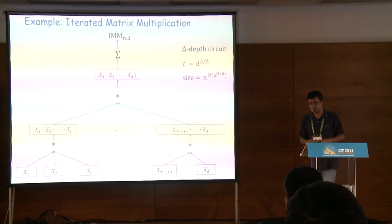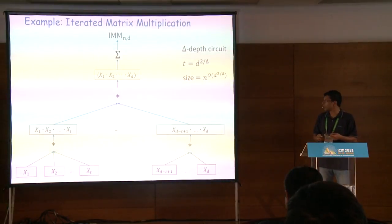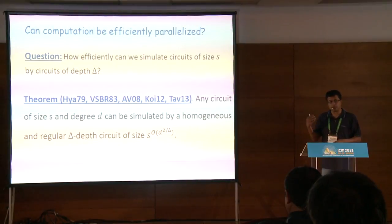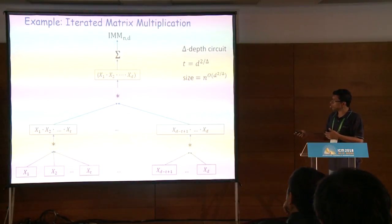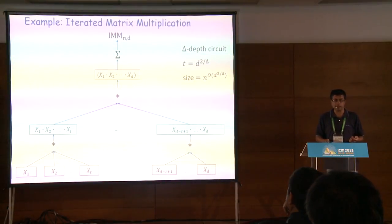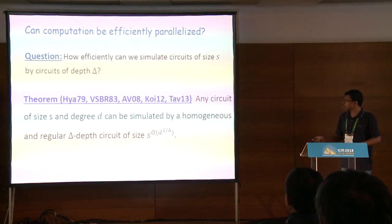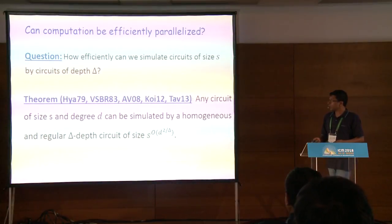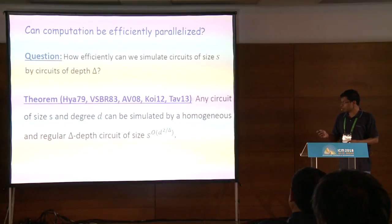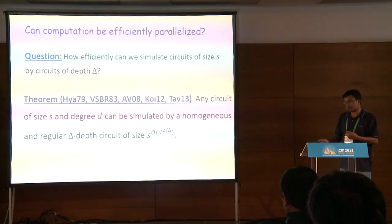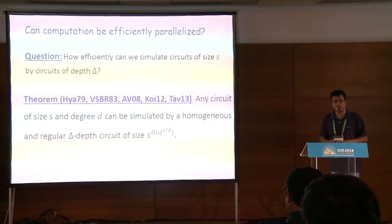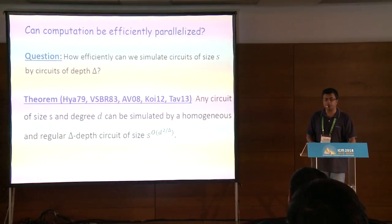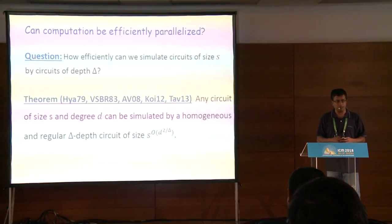The remarkable result, starting from the work of Hyafil, then Valiant, Skyum-Berkowitz, and a series of works after that, is that any arithmetic computation can be parallelized similarly. If you have a circuit of size s computing a polynomial of degree d, you can do the same computation with a circuit of depth delta, paying a size cost qualitatively similar to what you pay for iterated matrix multiplication — roughly, any arithmetic computation can be reduced to matrix multiplication.